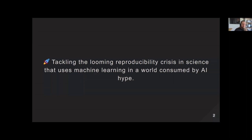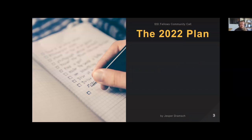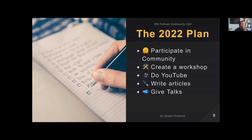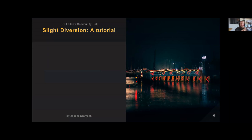What did I do? Well, let's start with a plan. I wanted to mainly participate in the community — create a workshop, do some YouTube, write some articles, give some talks. Real good tip for fellows: if you just apply with the stuff you're already doing, that makes your life much easier. But I started out with a diversion right away, because I'm neurodivergent — I have ADHD and I'm slightly autistic — so I just did something completely different from what I applied with.